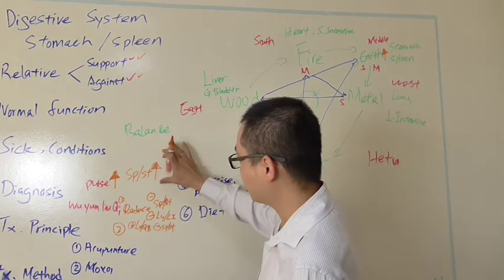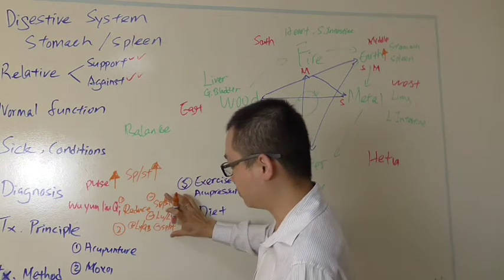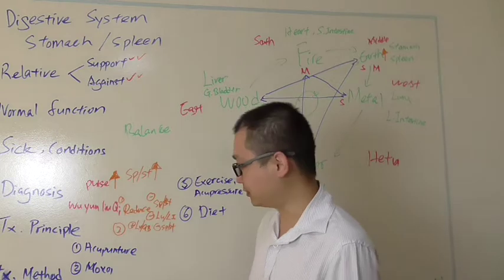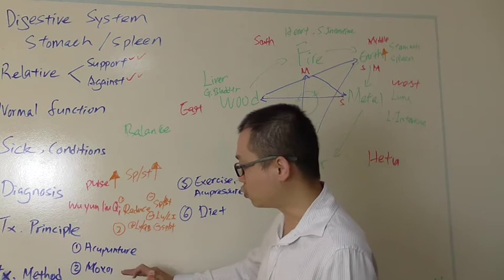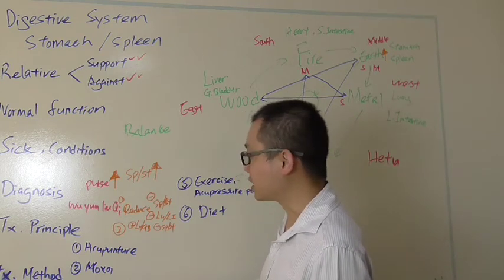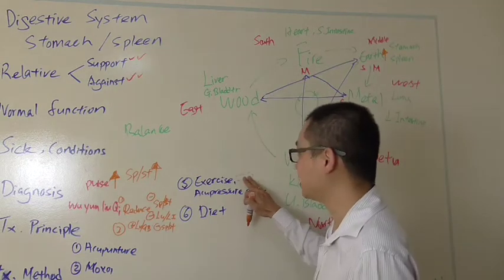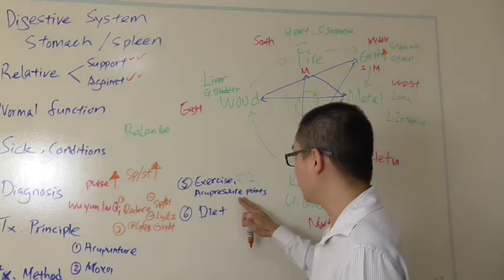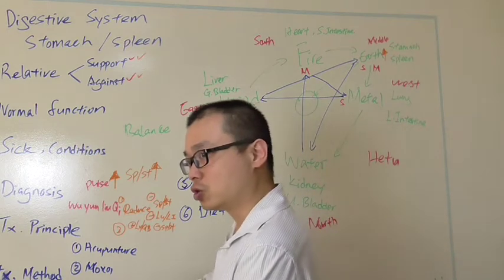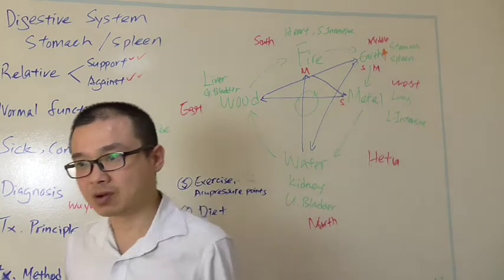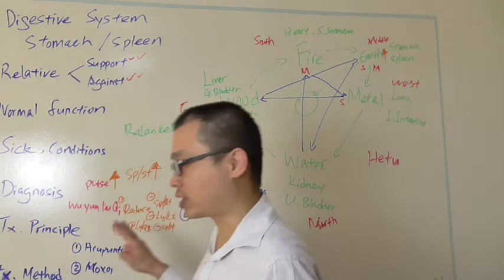Okay, now let's keep going. Now we have the principle, we have the diagnosis, we have made the diagnosis, we have the treatment principle. Now we go to treatment method. What treatment method can we use? We can do acupuncture, we can do moxa, we can do Chinese herbs, we can do emotional daily practice, we can do exercise and acupressure points, which suggests you diet. So there are many ways we can contribute to the treatment. It doesn't mean you have to do everything, but this is what we do, this is what we can help.